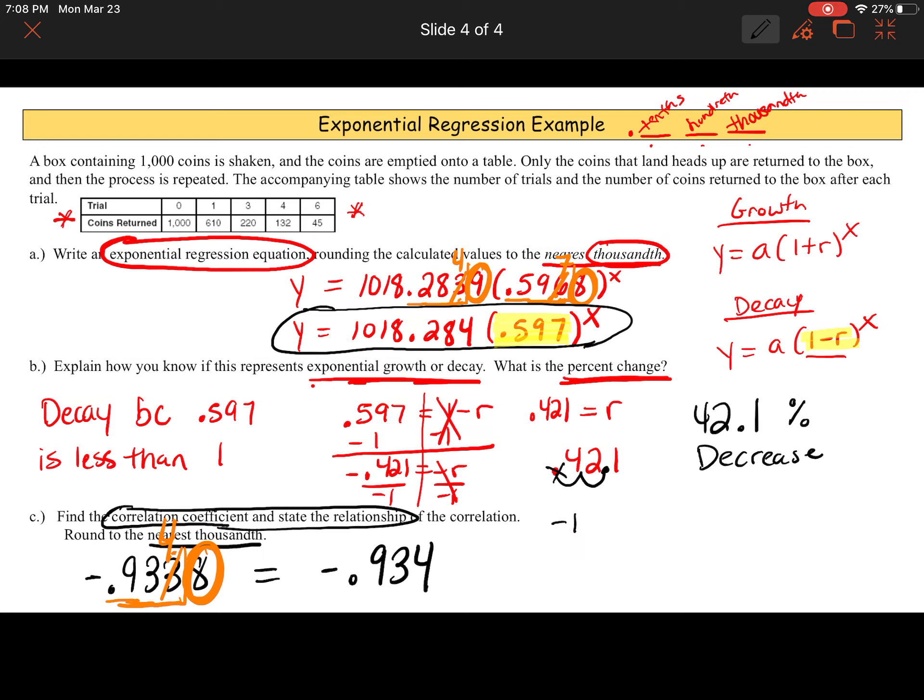If we think about our number line from negative 1 to 0 to positive 1, negative 0.934 is really close to negative 1. It's like right around here on a number line. So, we have a strong negative correlation. And that's our answer. Here's the correlation coefficient. It's a strong negative correlation. Alright, guys. That's it for today's lesson.